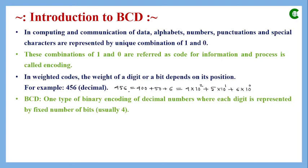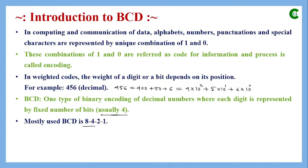Binary Coded Decimal (BCD) is a type of binary encoding where each digit of a decimal number is represented by a fixed number of bits — usually 4 bits. BCD can have other formats using 5 or 8 bits, but the most commonly used weight pattern is 8-4-2-1. We will explore BCD and weighted codes in detail.